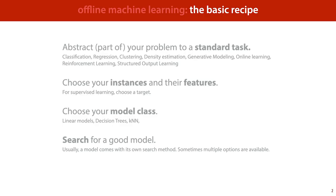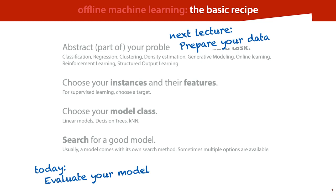Here's the basic recipe that we showed in the first lecture, consisting of abstracting your problem to a standard task by choosing instances and features, choosing your model class, and searching for a good model. What we're going to do today is look at what happens afterwards — specifically, how do we evaluate our model? How do we figure out whether the model that our search has produced is actually any good? And in the next lecture, we will look at what happens before the recipe: how do you get your data and how do you prepare it so that it's suitable for use in machine learning?